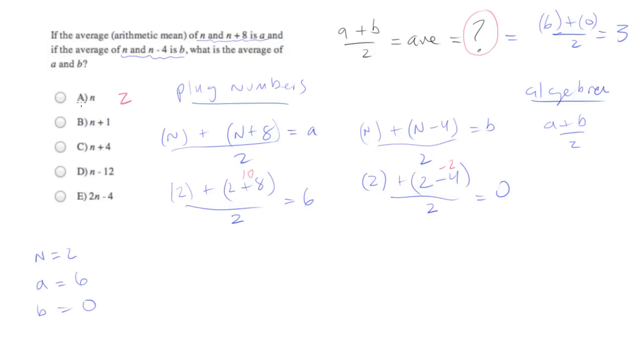So answer choice a is 2. That's out. Answer choice b is 2 plus 1. That's 3. That's looking pretty good. But let's check the others. 2 plus 4 is 6. So that one's out. 2 minus 12 is negative 10. That's definitely out. And 2 times 2 minus 4 equals 0. So that one's out.